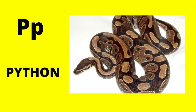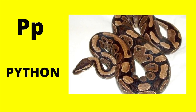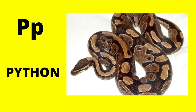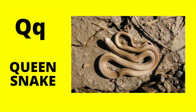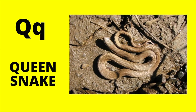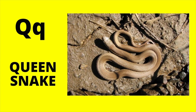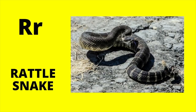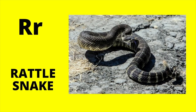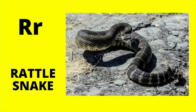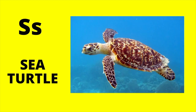P is for Python. P, python. Q is for Queen Snake. Q, queen snake. R is for Rattlesnake. R, rattlesnake.